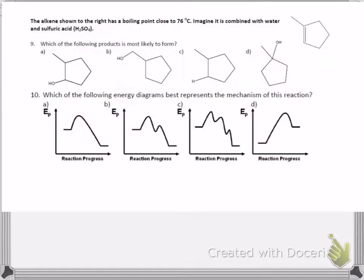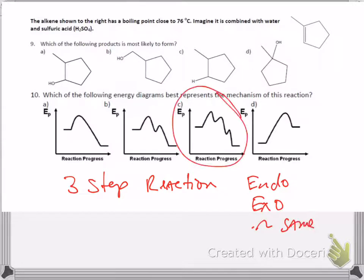Okay, so going back to the mechanism, we had a three-step mechanism for the alkene reacting with water to make the alcohol. Three steps, total of two intermediates, endothermic, exothermic, and then about the same more exothermic, so that would be C.